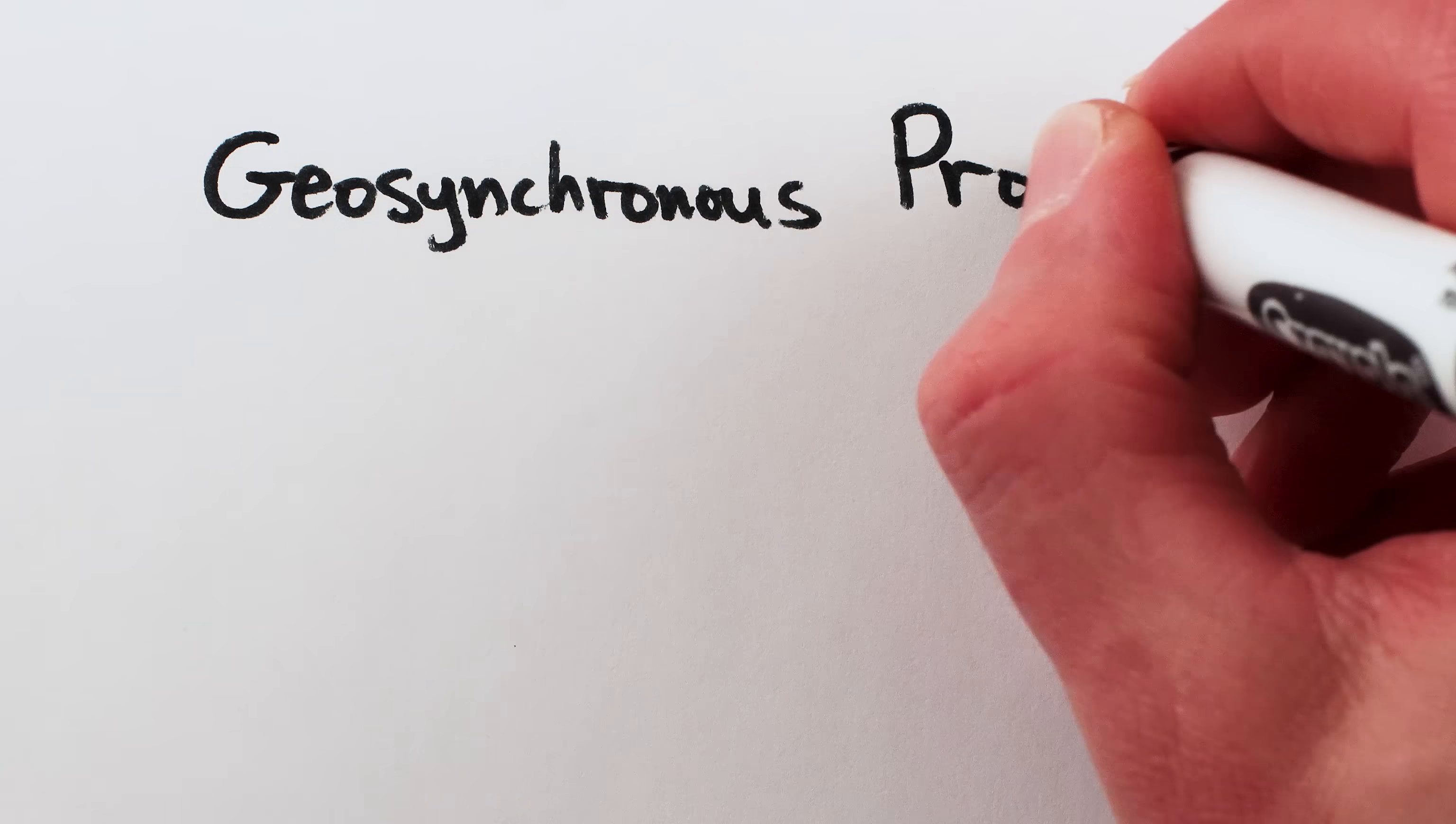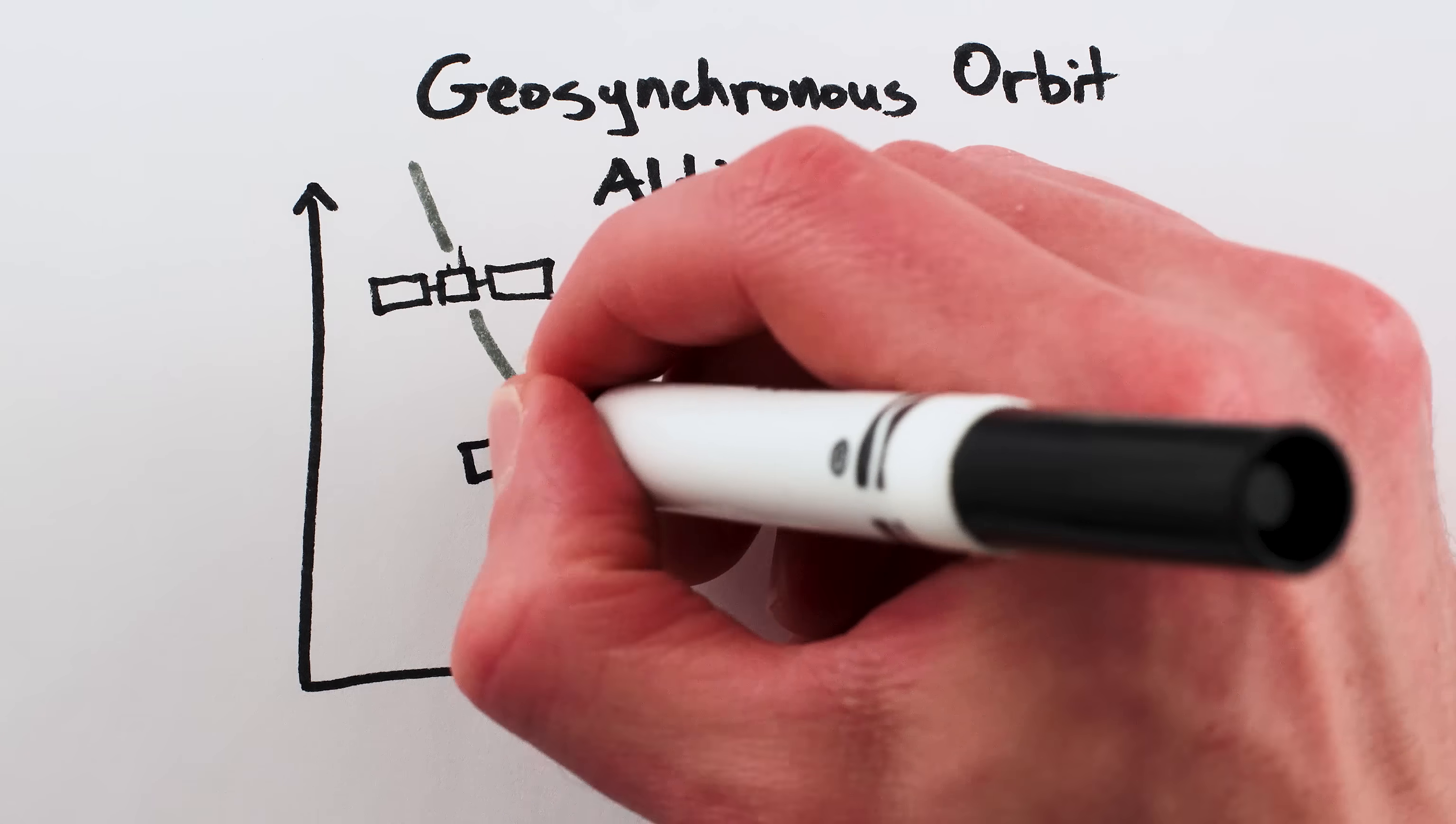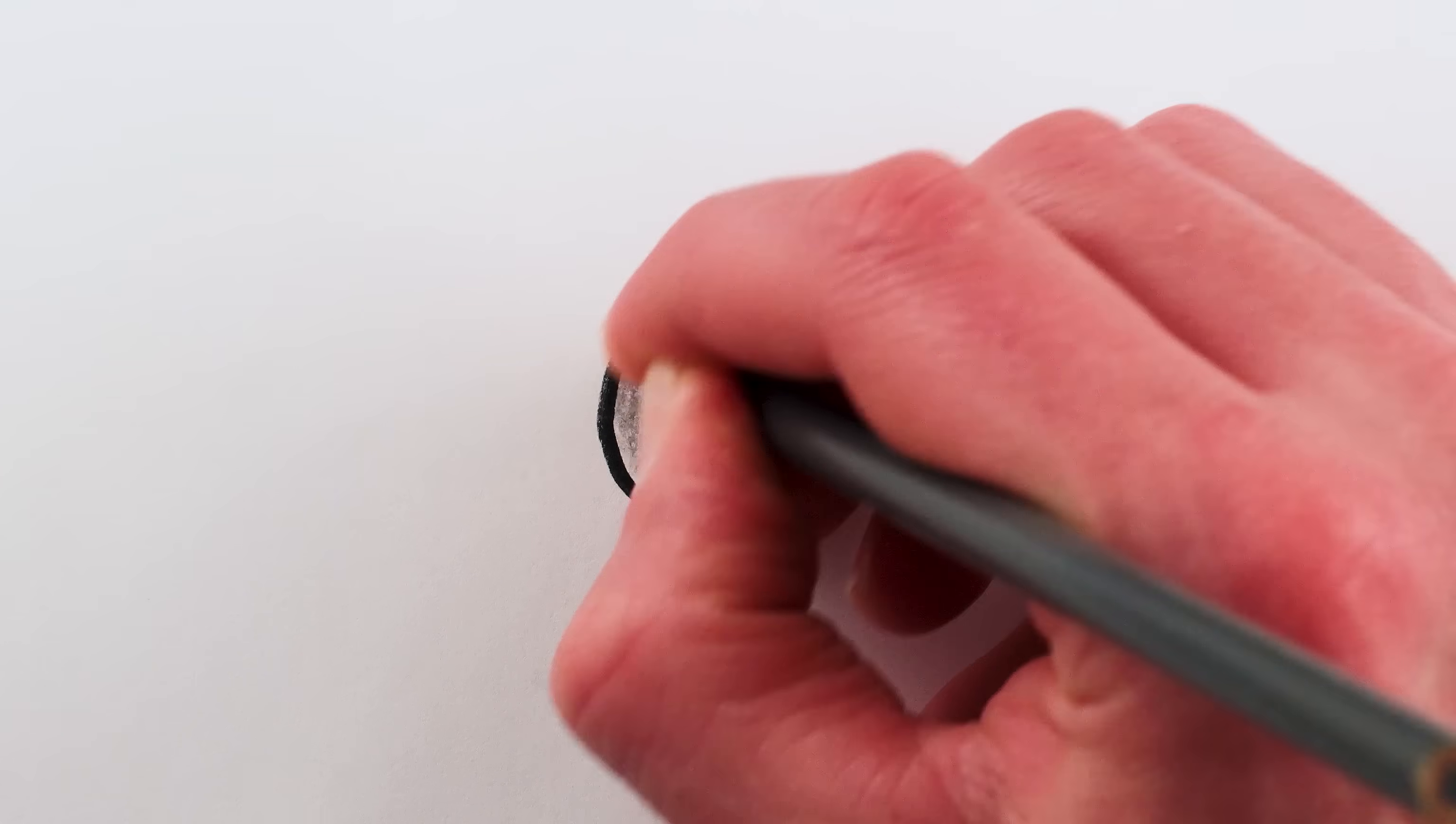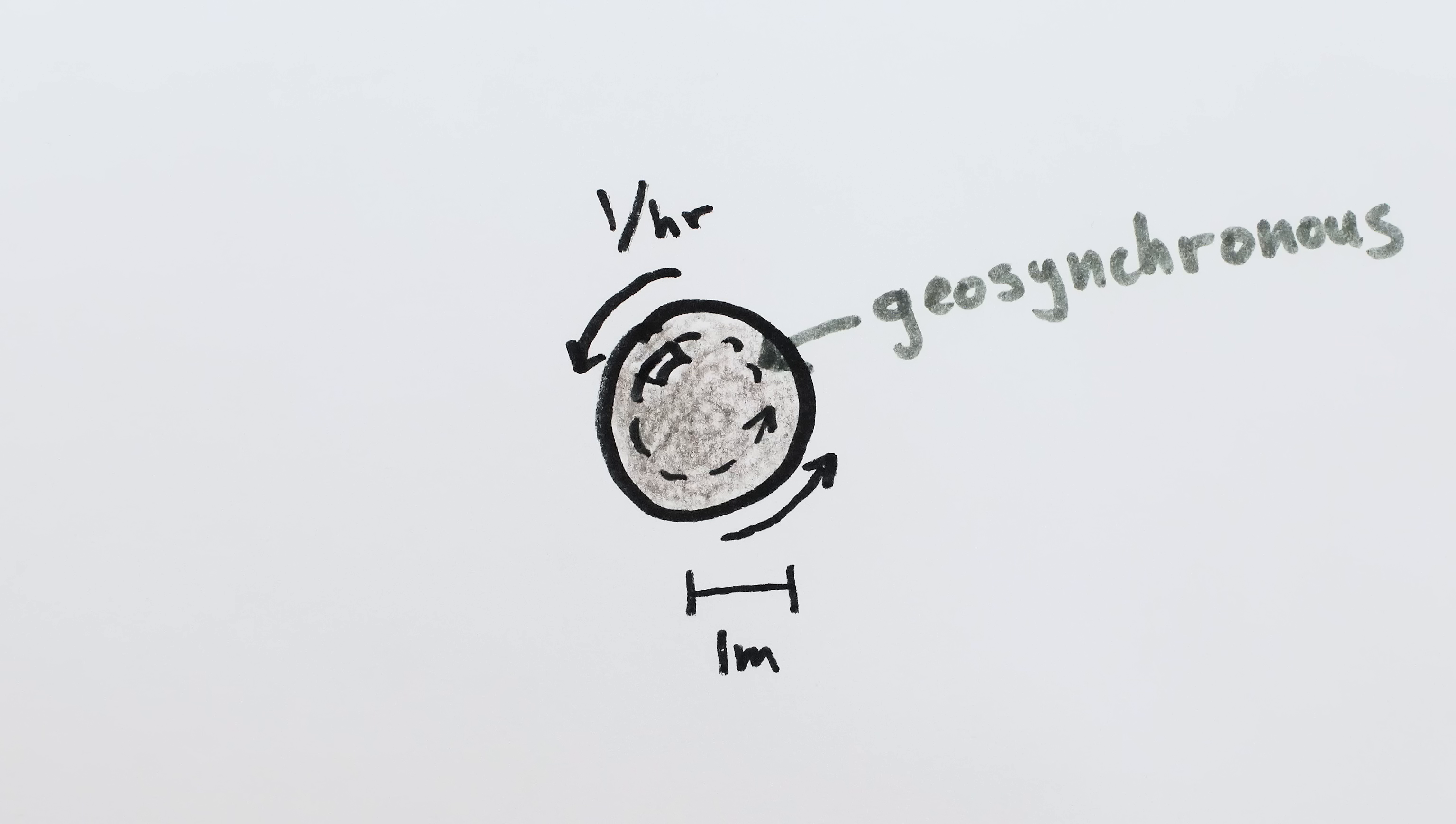But there are two potential problems with geosynchronous orbits. The first is, they don't always exist. The faster a planet is spinning, the closer you have to be to it in order to be in a geosynchronous orbit. So what if the planet is spinning so fast you'd have to be inside it to be in sync? That's certainly a potential problem if you're orbiting a ball or dog or something held together by internal tension forces. A solid steel ball with a 1 meter radius spinning once per hour only has geosynchronous orbits that are inside of it.